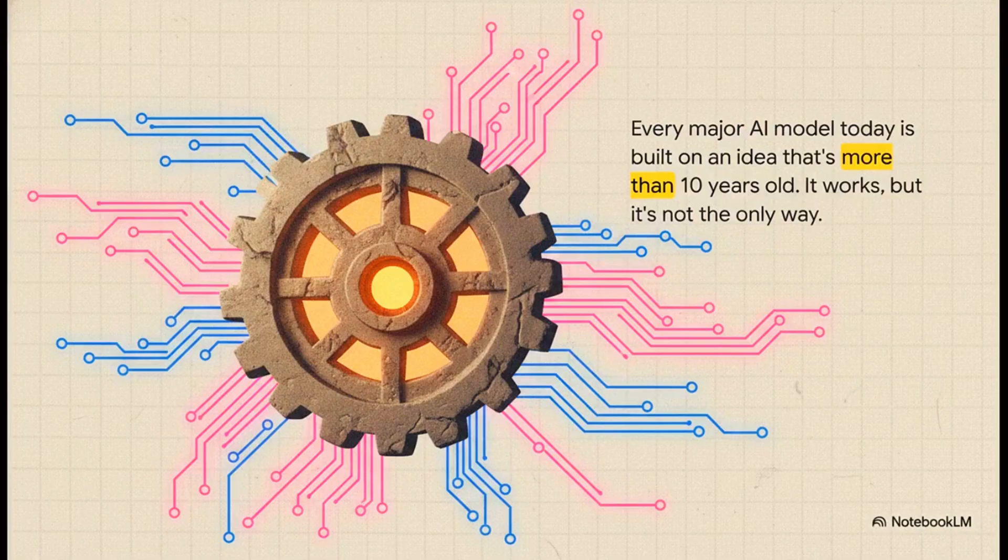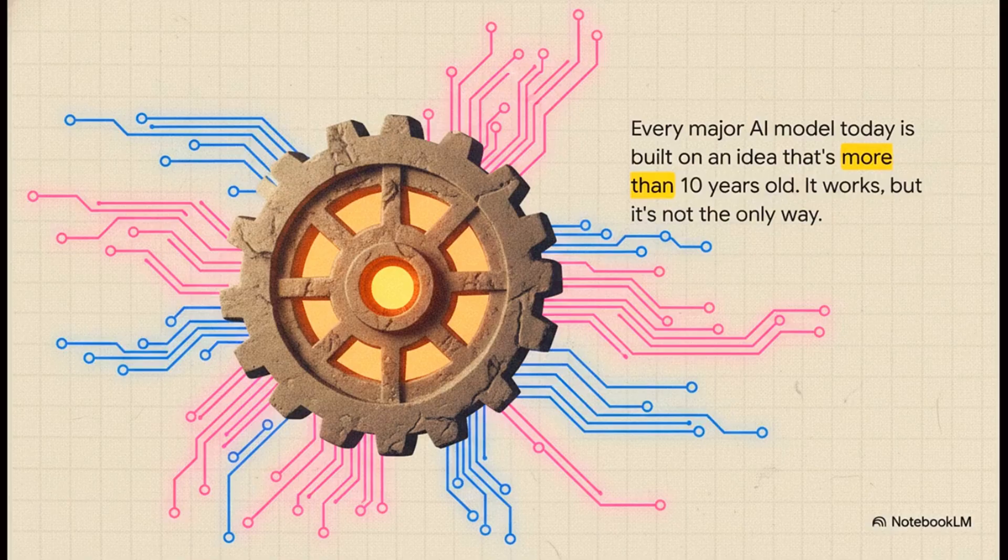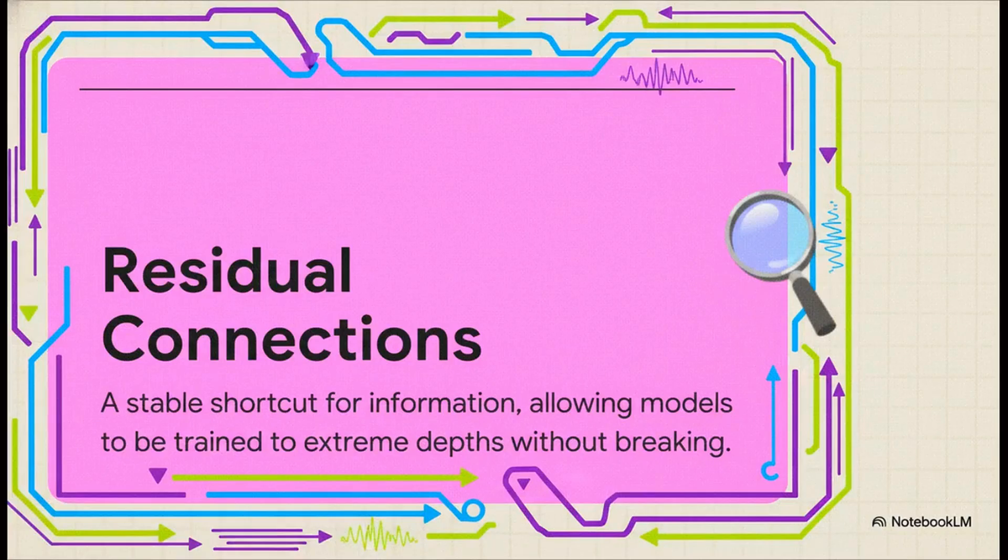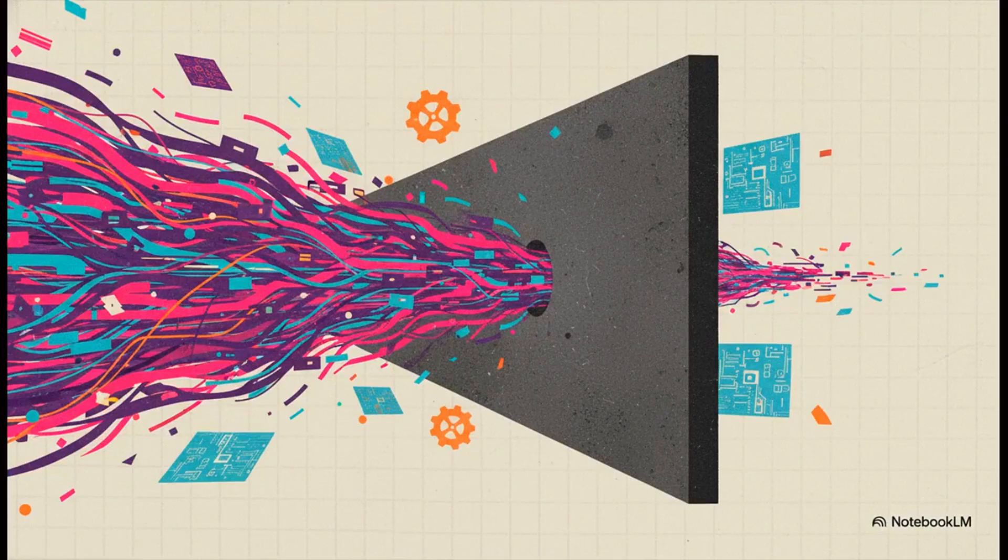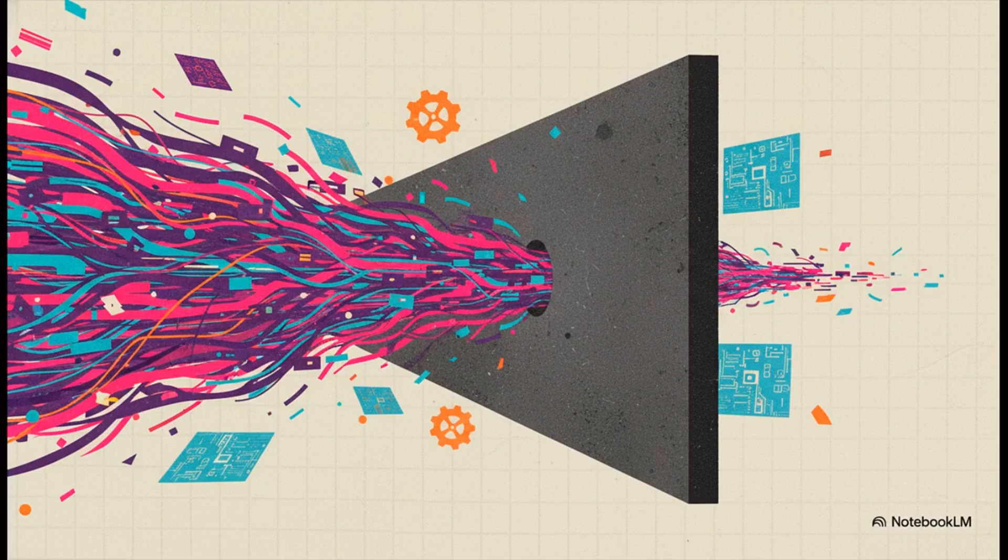So to really get what they did, we first have to look at how pretty much all current models are built. It all comes down to something called residual connections. Think of it as a stable shortcut for information. But that stability came with a huge trade-off, a really narrow information bottleneck inside the model.